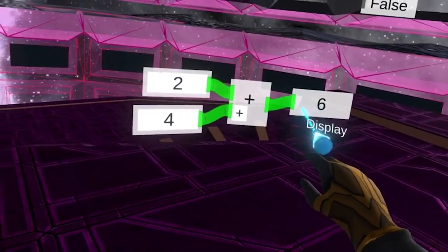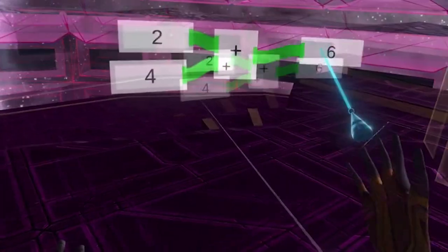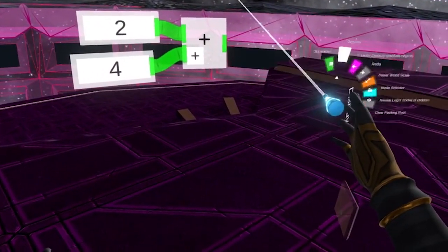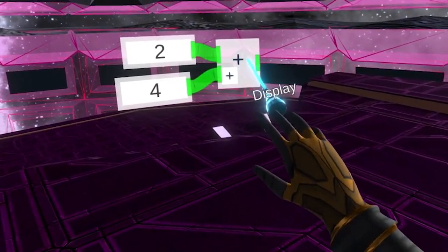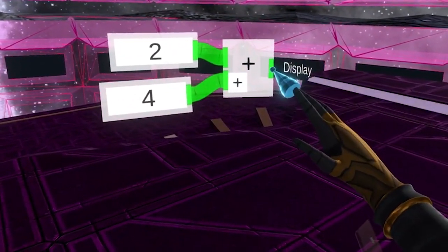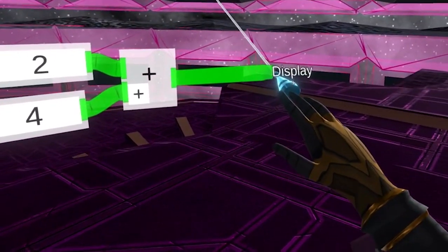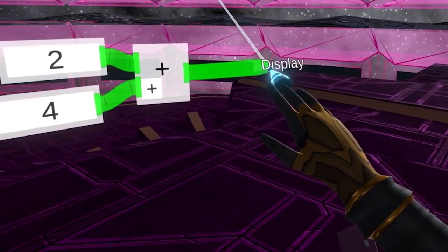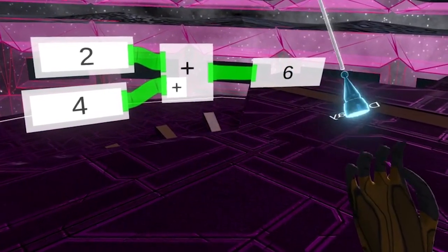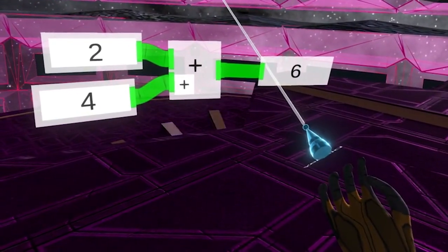There are a few things I want to explain before we move on to the next segment. I want you to know that there is a shortcut for creating a display node. If you pull out a strand for any output and press the secondary action button, it will create a display node there without you needing to select it from a menu first.